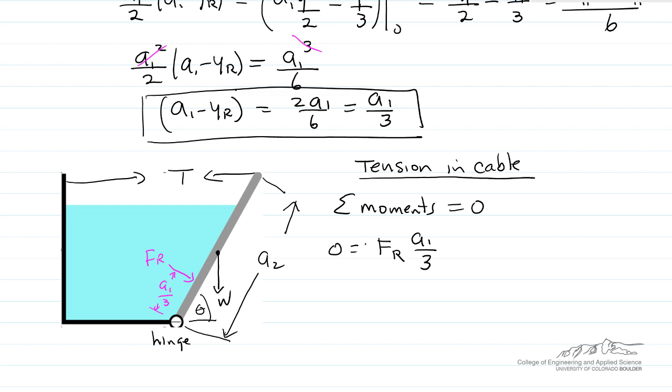That's clockwise, so it's positive. Then the weight of the gate, which is at the center at a2/2. The moment arm is (a2/2) cos(θ).